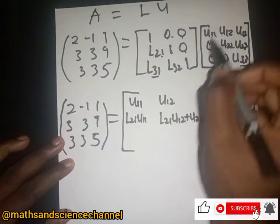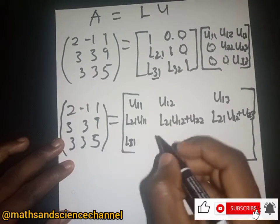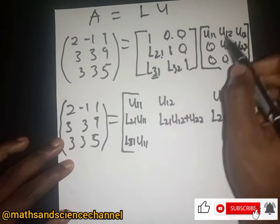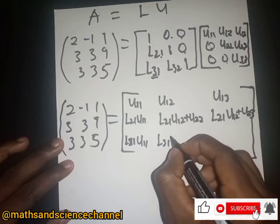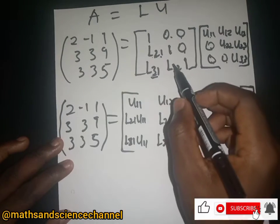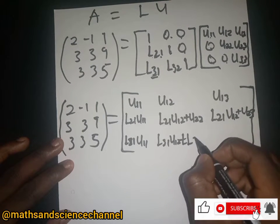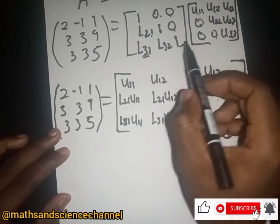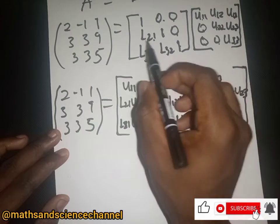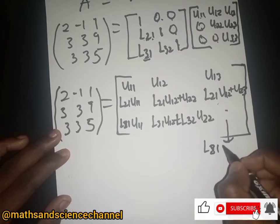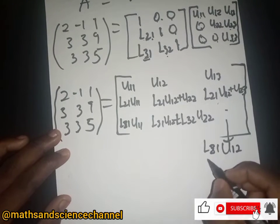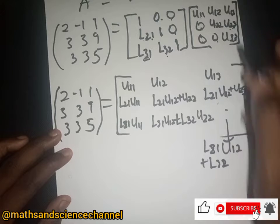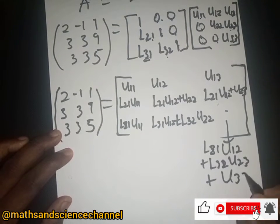For the third row: L31 multiplies U11 gives L31·U11; L31·U12 plus L32·U22; and for the last entry, L31·U13 plus L32·U23 plus U33. These products correspond to the entries of matrix A.